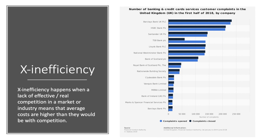This chart shows the number of banking and credit card customer complaints in the UK in just the first half of 2018 — over a quarter of a million for companies such as HSBC and Barclays. X inefficiency is when companies underperform because they face a lack of real competition in the market.